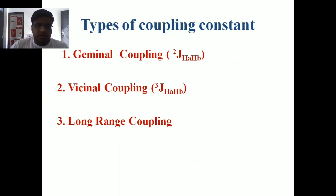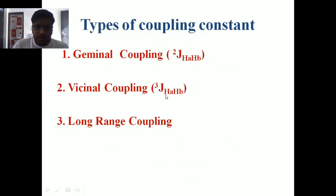We can denote the geminal coupling constant with superscript ²J_HA_HB, where the superscript 2 denotes the number of bonds through which the coupling between HA and HB — protons in a chemically non-equivalent environment — takes place. In the same way, the vicinal coupling can be denoted by superscript ³J_HA_HB, and the third one is long range coupling.